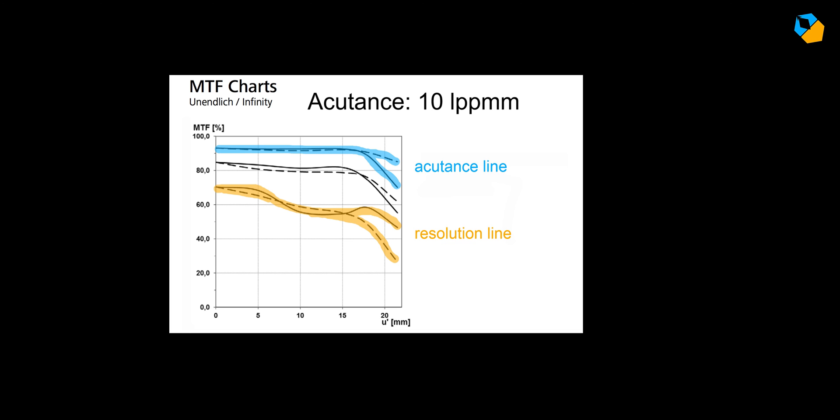So how can an MTF graph tell us about the sharpness and edge contrast of a lens? The higher the points for both, the better. The straighter they are, the better. The ideal lens would be just one line for all, but that's impossible.